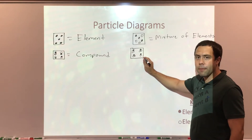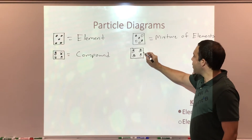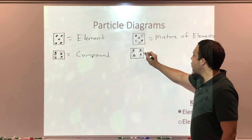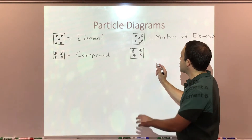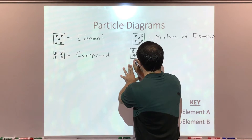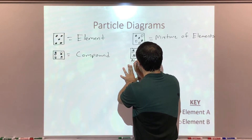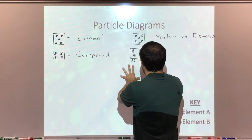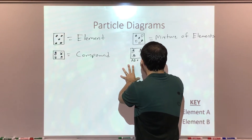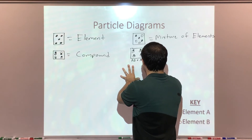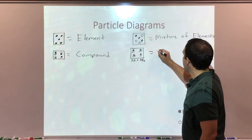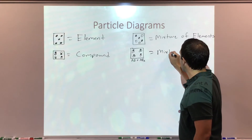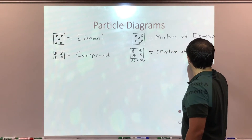One element A, one element B — that's one compound. And I have a different compound: A with two B's. So I have compound AB and compound AB2. Here I have a mixture of compounds.